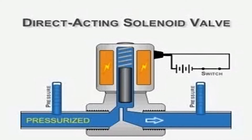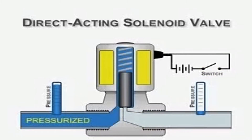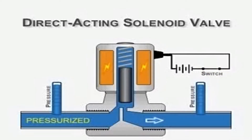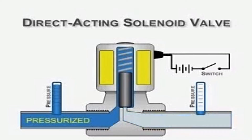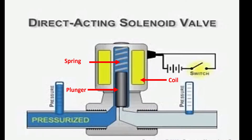When the power supply is de-energized, the coil immediately de-energizes and the plunger and spring move back to their original position, shutting off the process fluid. The upstream remains pressurized while the downstream gets de-pressurized. This is how a solenoid valve works: when the coil energizes it lifts the plunger, and when it de-energizes it releases the plunger back to its original position.